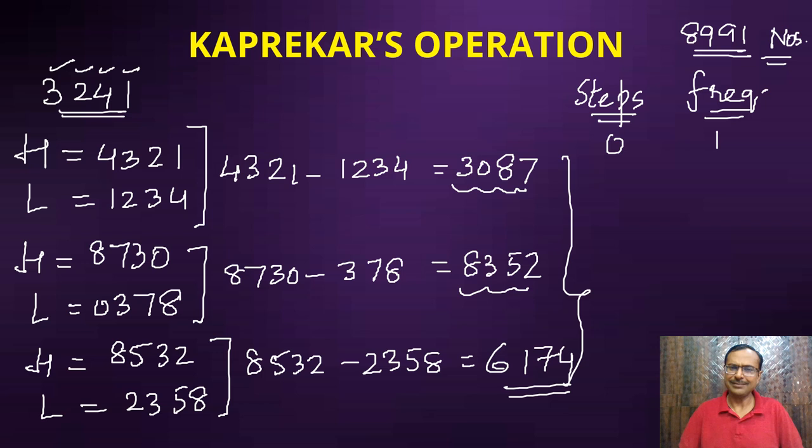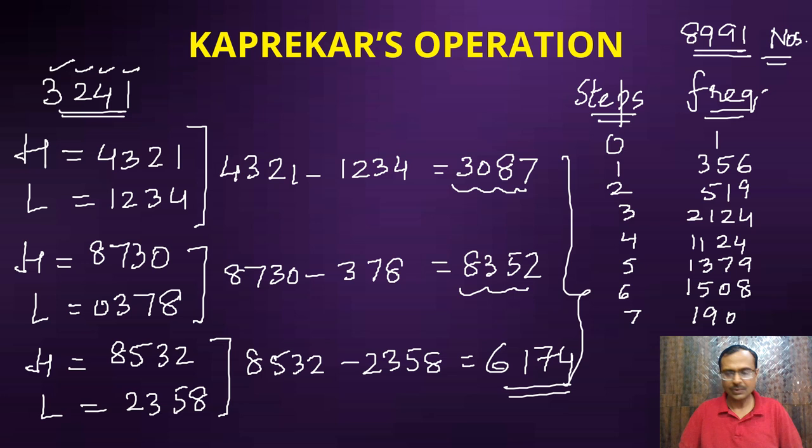Zero steps for one number - you can tell me in the comments which one is that number. One step for 356 numbers. Two steps for 519 numbers. Three steps for 2124 numbers. Four steps for 1124 numbers. Five steps for 1379 numbers. Six steps for 1508 numbers. And seven steps for 1980 numbers. These numbers total up to 8991.